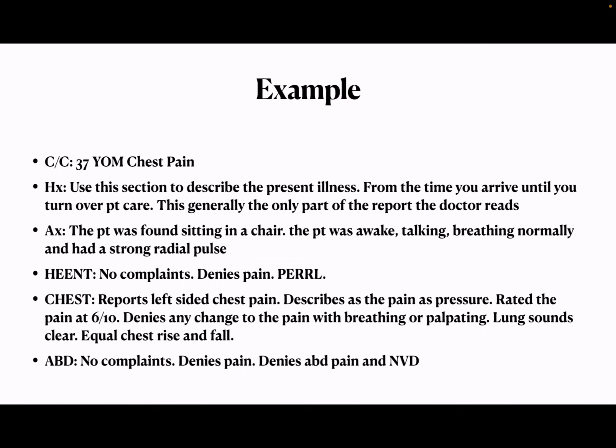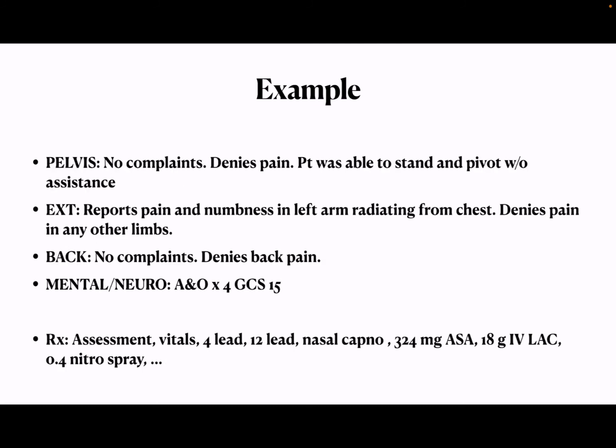Next is your chest — they report left-sided chest pain and describe the pain as pressure, rated six out of ten. Denies any change to the pain with breathing or palpation. Lung sounds are clear, equal chest rise and fall. The abdomen: no complaints, denies pain, denies abdominal pain, nausea, vomiting, diarrhea. Pelvis: no complaints, denies pain — a good blanket statement for the pelvis on a non-trauma call: patient was able to stand and pivot without assistance. Extremities: reports pain and numbness in the left arm radiating from the chest, denies pain in any other limbs. Back: no complaints, denies back pain.